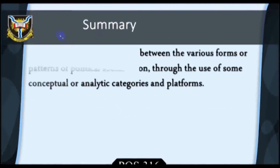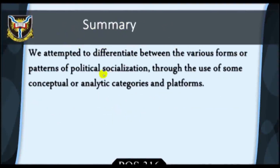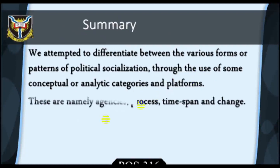Study Session Summary. In this lecture, we attempted to differentiate between the various forms or patterns of Political Socialization through the use of some conceptual or analytic categories and platforms — namely agencies, process, time span, and change. The ultimate aim is to make these conceptual categories adaptable to comparative analysis. End of Study Session 6. Thank you for listening.